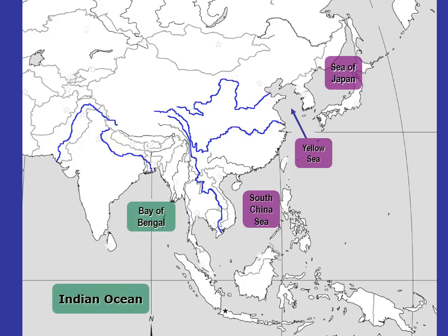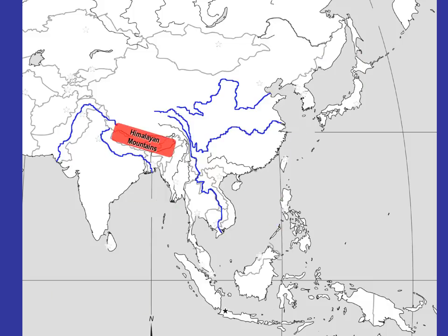And down here we have the Indian Ocean — a big ocean just off of India. It's all connected. Now for land-based features: the Himalayan Mountains form a border in the northeastern part of India, separating India and China. To the north of China, we have the Gobi Desert — a very large desert. In the west of China, we have the Taklamakan Desert. Our fourth land feature is the Korean Peninsula, which sticks off the Asian mainland in the direction of Japan.